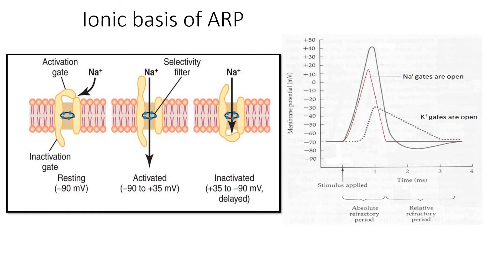The ionic basis of the absolute refractory period relates to the sodium channel, which has two gates: the activation gate and the inactivation gate. During the absolute refractory period, the sodium channels are already open and cannot open further; then as they start closing, the inactivation gate closes. During this phase, the sodium gates have been inactivated, and no matter how strong the stimulus is, they will not open.